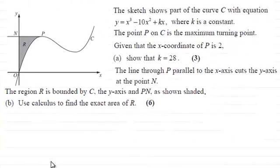Hi there. Now before we start part B, just as a quick reminder, we were given the equation of this curve C as being y equals x cubed minus 10x squared plus kx. And we were given that this point P was a maximum when x was 2, and we had to show that k equals 28.